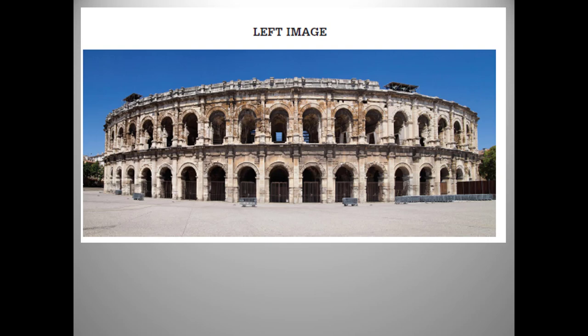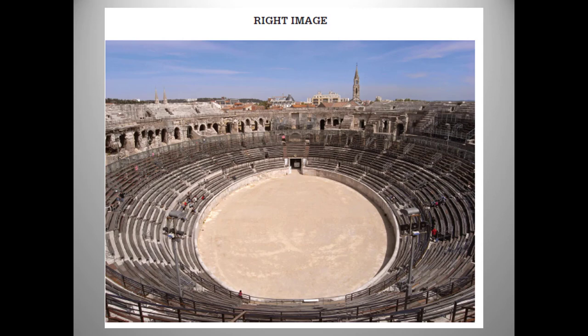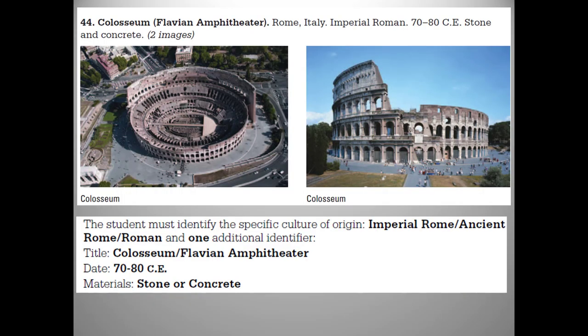Back to the 2016 question. Here's the first image our students got, and here's the second. What is the required work, and what is the culture? You all got this one, I'll bet. Note that the scoring guidelines also cut students some slack, at least when it came to identifying the culture. Graders accepted ancient Rome or Roman as culture ID, as well as imperial Roman, which is what the College Board identifies as the culture. I don't actually know how much leeway the graders gave on dates, because that information wasn't in the scoring guideline.